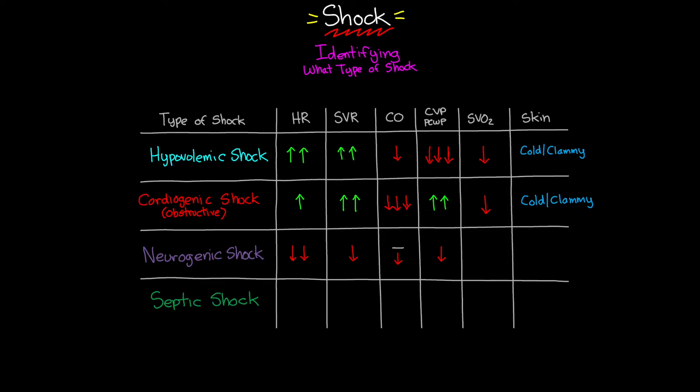The body extracts more oxygen from blood moving slowly through the system, so SvO2 decreases in neurogenic shock. Crucially, because there is no sympathetic vasoconstriction occurring, the patient is actually going to have warm, dry skin — the opposite of what we see in hypovolemic and cardiogenic shock.